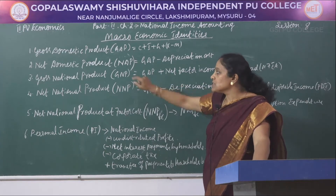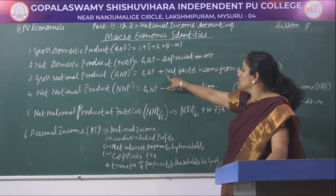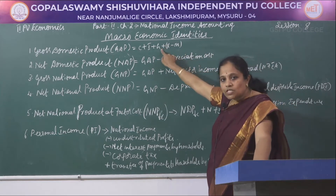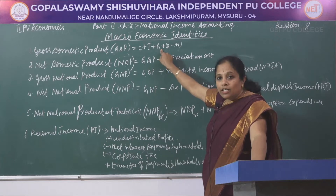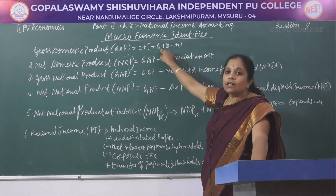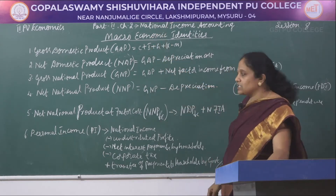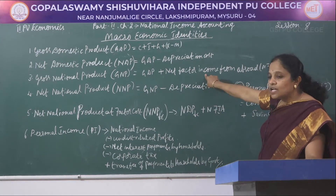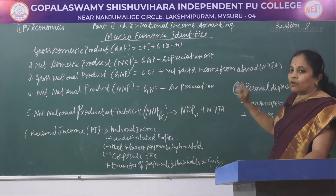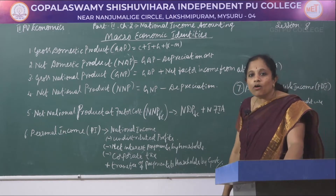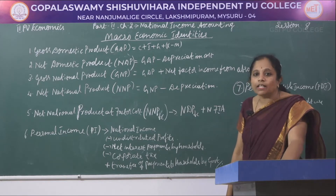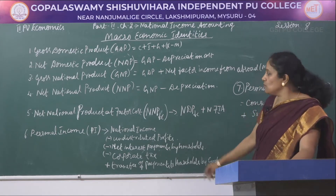The third identity is gross national product, which is GDP plus net factor income from abroad. When calculating GDP, we count income earned by foreigners in our country but ignore nationals earning abroad. For GNP, we consider the net factor income from abroad — the net worth of goods and services produced by our citizens abroad and their net income.